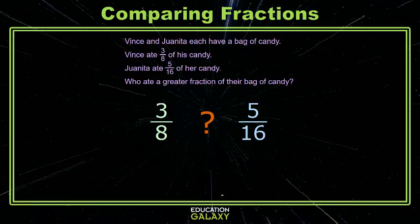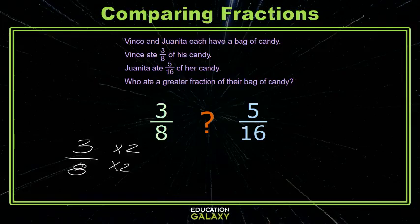So we have the denominators 8 and 16. If we multiply those, that's kind of a big number. What we want to do here is recognize 16 as a multiple of 8. So we'll use that common multiple to create a common denominator. We'll multiply the top and bottom here by 2. We get the equivalent fraction 6 sixteenths.